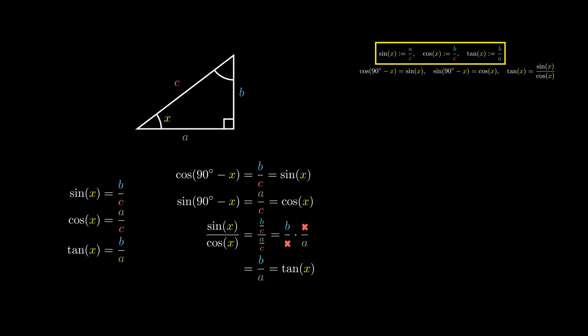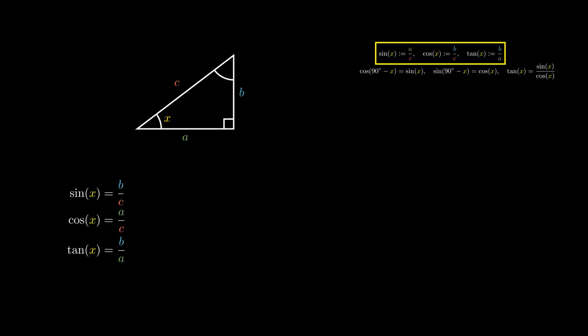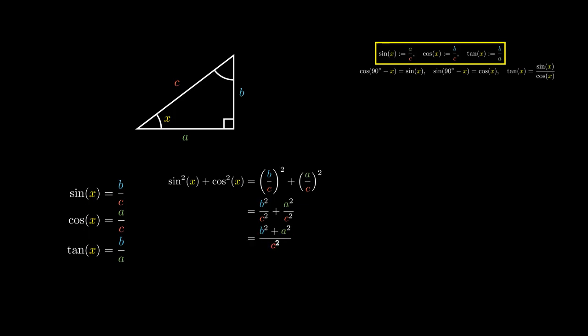Consider the expression sine squared X plus cosine squared X. Using the definitions, we can write this as B over C all squared plus A over C all squared, obtaining B squared plus A squared all over C squared. But by the Pythagorean theorem, B squared plus A squared precisely equals C squared, so C squared divided by itself gives us 1.